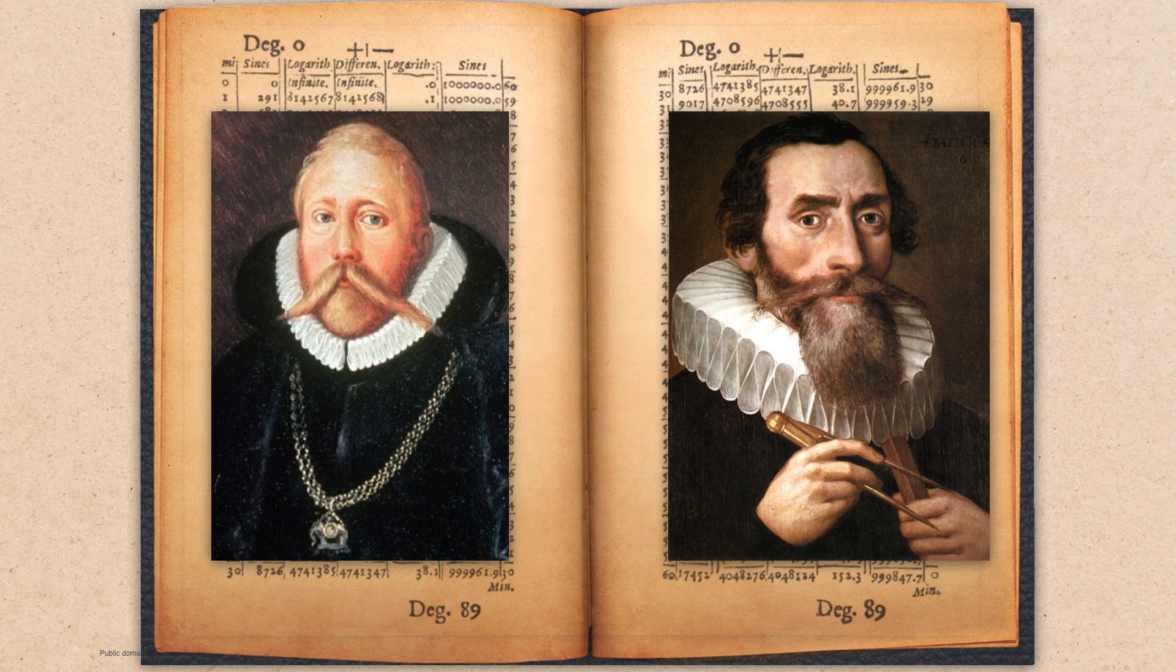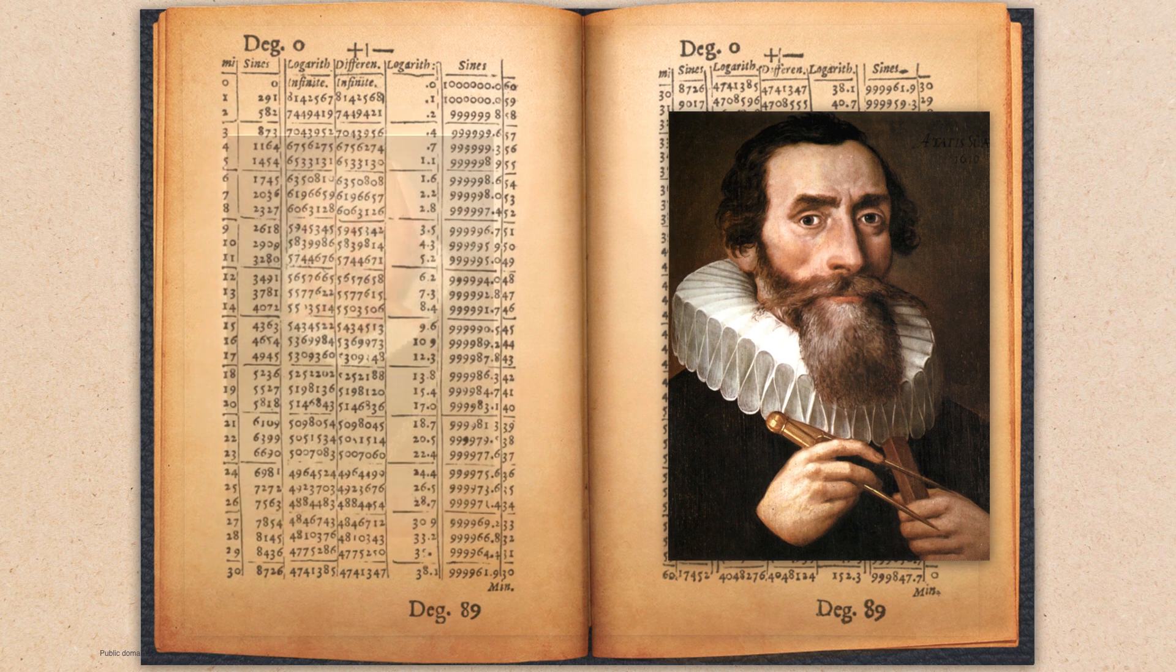So Kepler went to work for Tycho, but the problem was that he could not get all of Tycho's data. You see, Tycho was a little bit of an insecure guy, and he didn't want to just give this young mathematician all of his data. So Kepler worked with what little scraps of data Tycho would pass along. And this frustrated Kepler, and he was about ready to quit and give up and go back home, when luckily for Kepler, Tycho died.